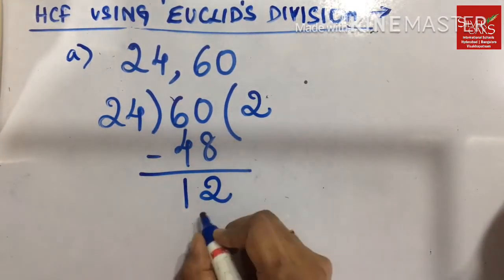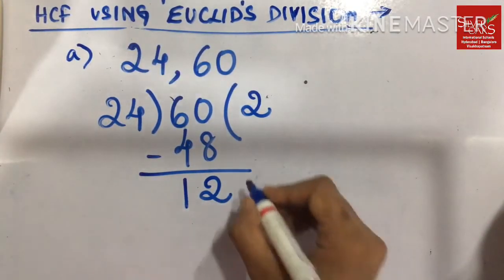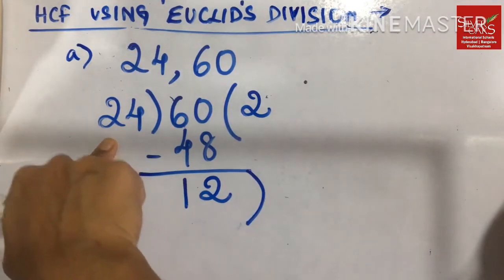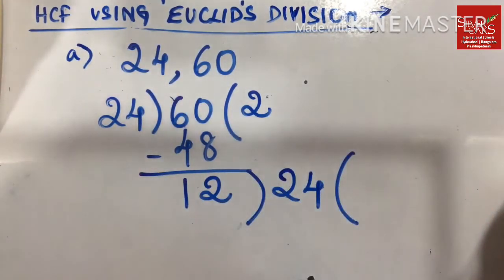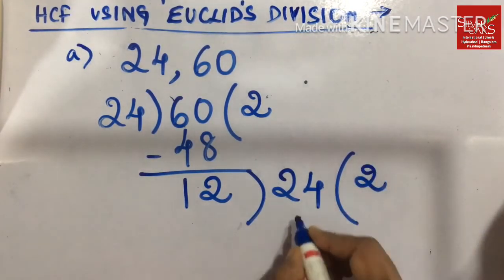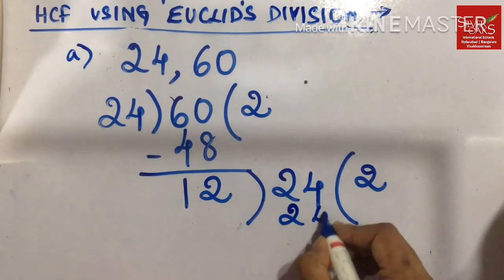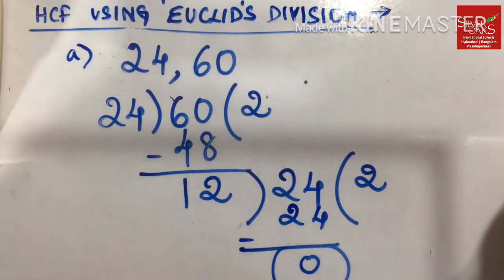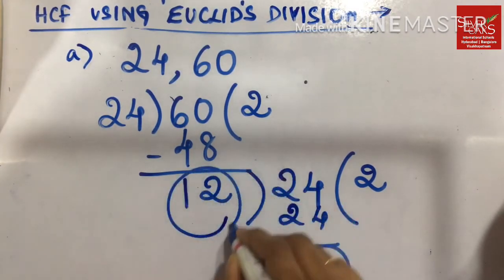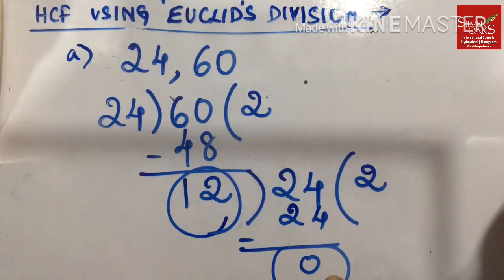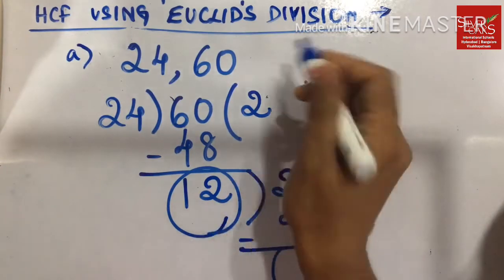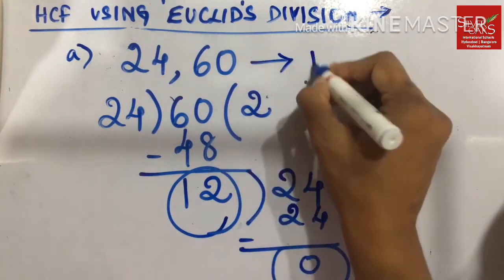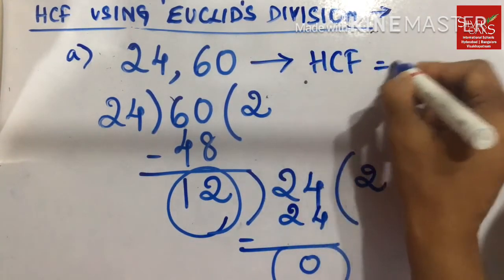Now what you have to do is your remainder becomes your new divisor and the previous divisor becomes your new dividend. You need to repeat this process till your remainder is zero. And this is exactly divisible: 12 times 2 is 24, and the remainder is zero. So the remainder is zero when our divisor is 12, so this is our HCF. The HCF of 24 and 60 is 12.